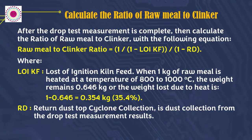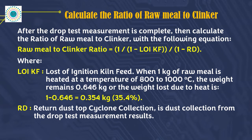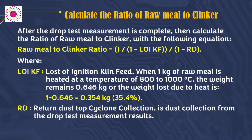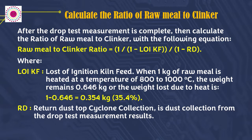After the drop test measurement is complete, calculate the ratio of raw meal to clinker with the following equation: Raw meal to clinker ratio = 1 ÷ (1 − LOIKF) ÷ (1 − RD). Where LOIKF is Loss of Ignition of Kiln Feed — the weight loss due to heat. When 1 kilogram of raw meal is heated at 800 to 1000 degrees Celsius, the weight remaining is 0.646 kg, or the weight loss due to heat is 1 − 0.646 = 0.354 kg, or 35.4% LOI.